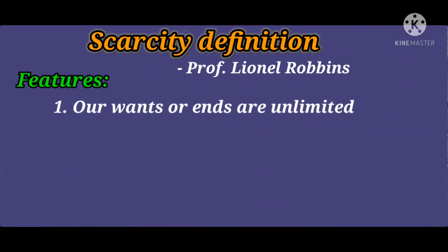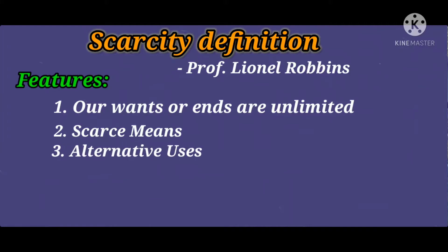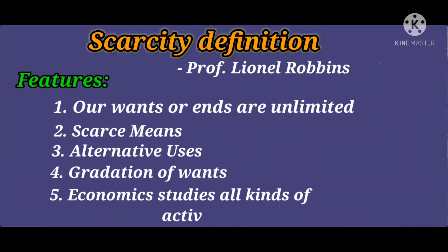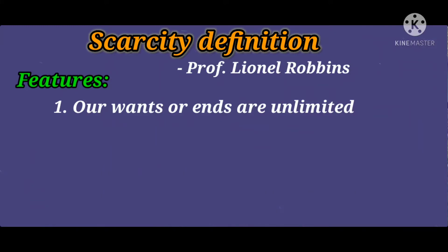Now we will discuss the features of Robbins' definition. Number one: our wants are unlimited — in Robbins' definition, 'ends' means unlimited wants which have no end. The next feature is that the resources to satisfy these wants are limited. Then there is alternative use of resources. Number four: wants can be classified in order of importance. The next feature is that economics is related to all kinds of activities which involve choice.